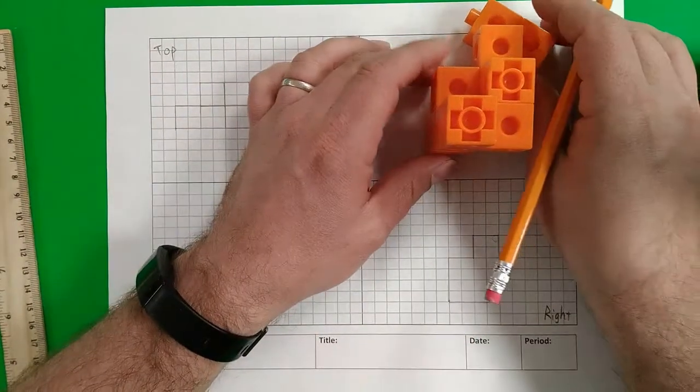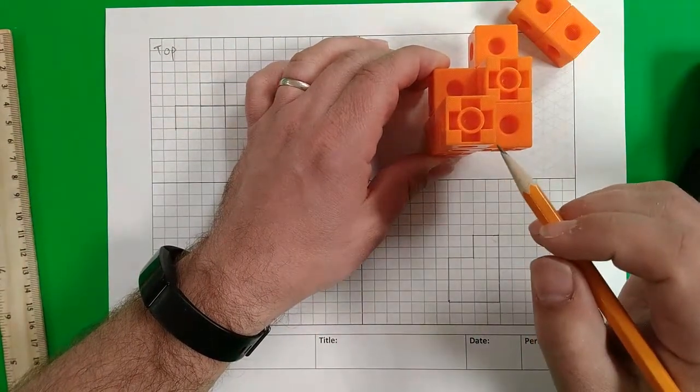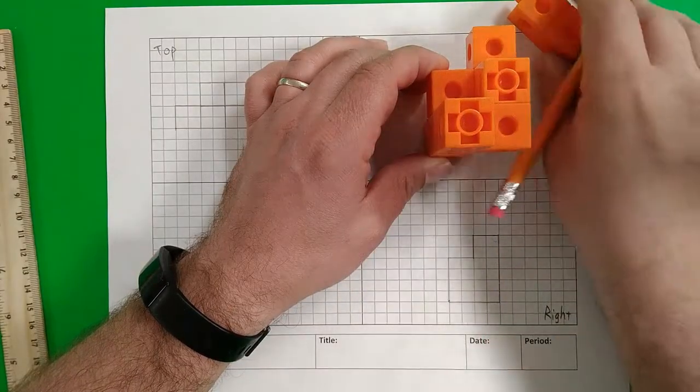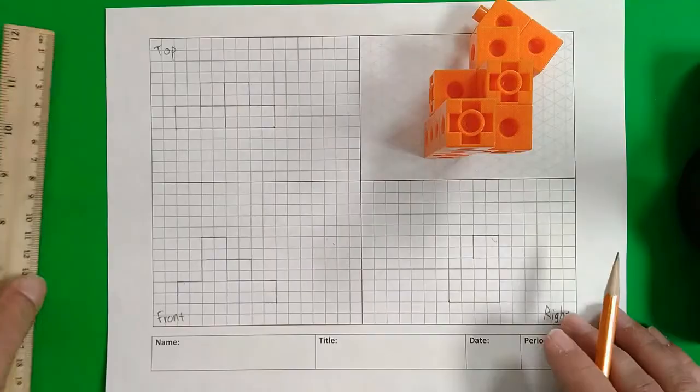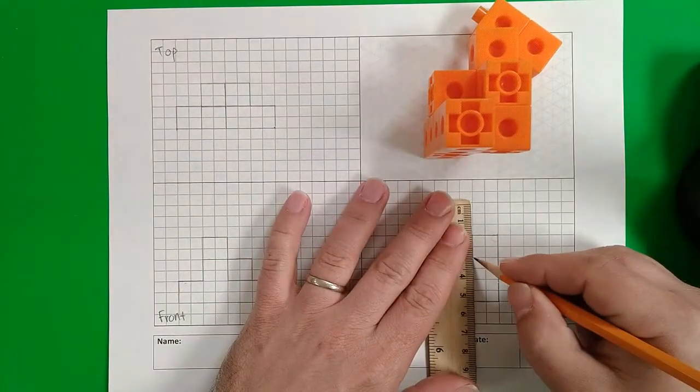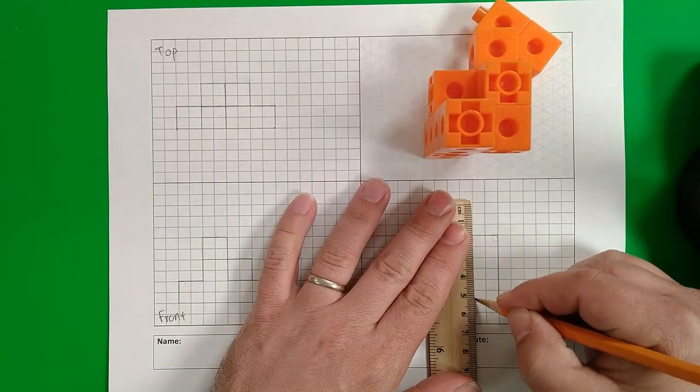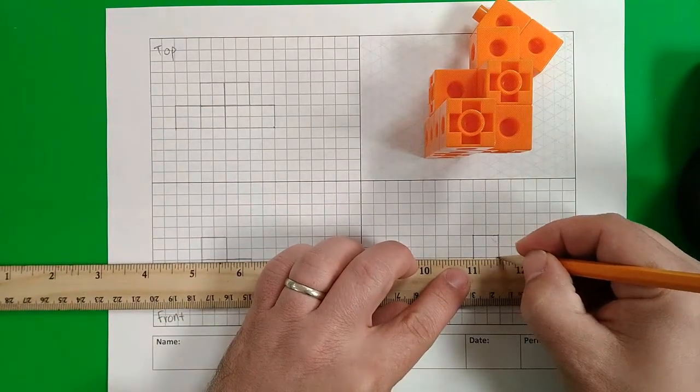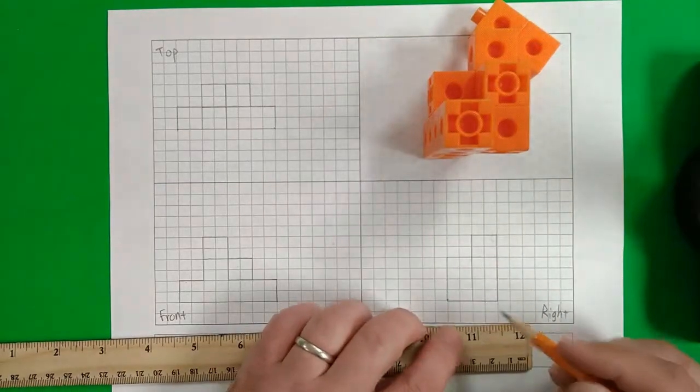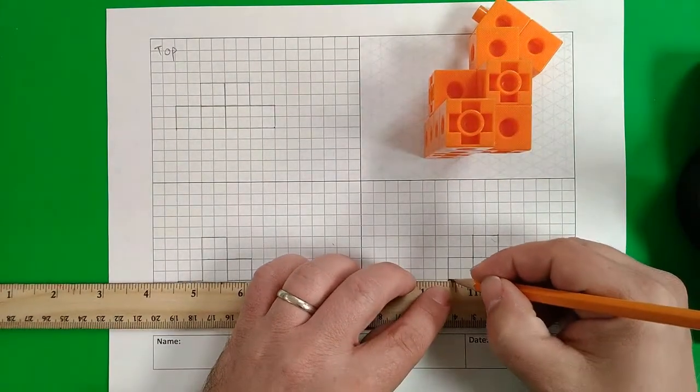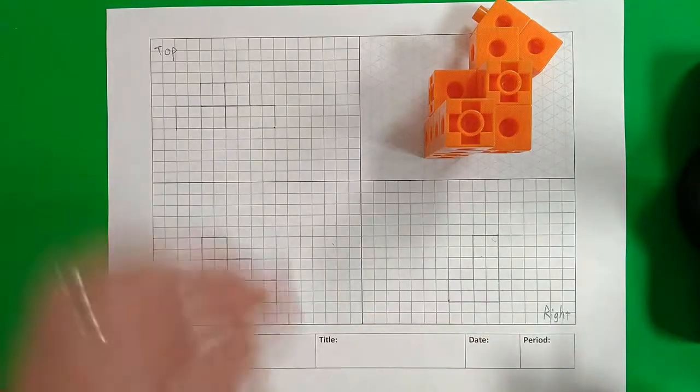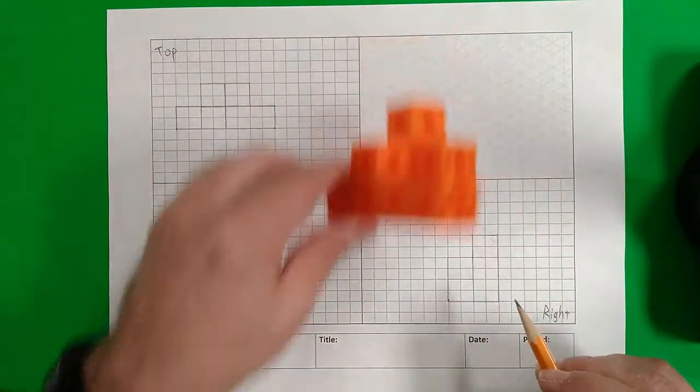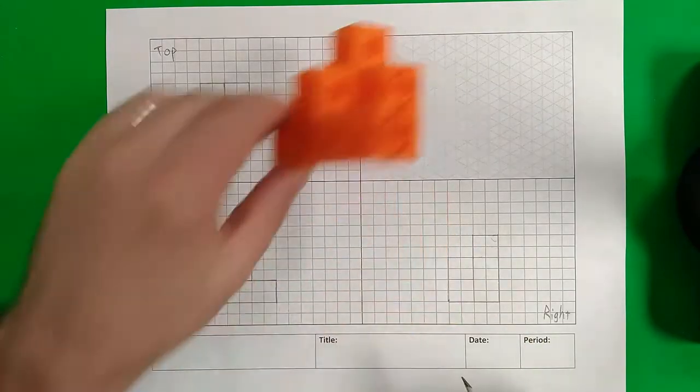So now we have my shape and we need to separate the different heights here. So we have one, two, three different heights visible. So I know these two are going to be at the same height. So I'm just going to go ahead and isolate those in the drawing, and isolating those also isolates that block. And now I just need to draw these two. So I draw a line across and there we have what looks to be our right side view.